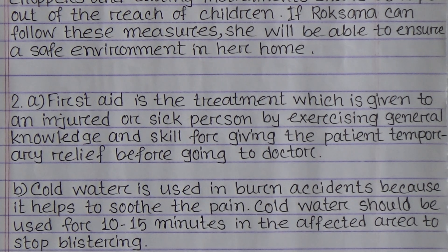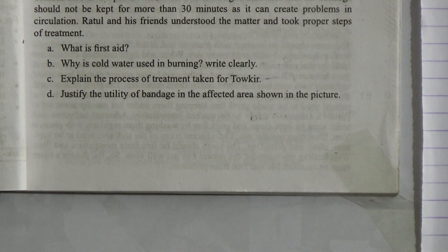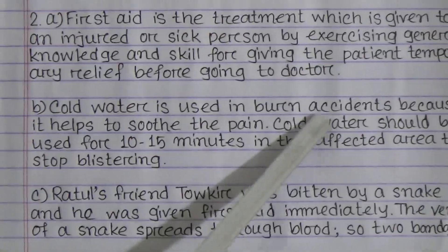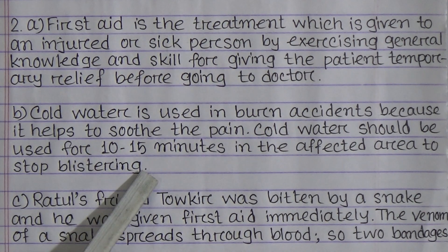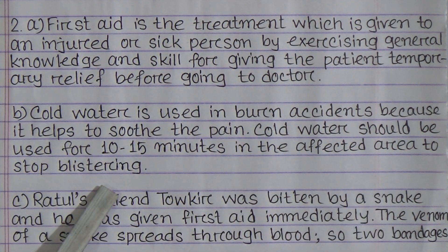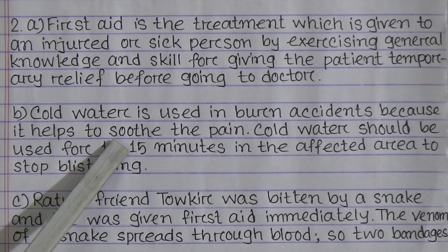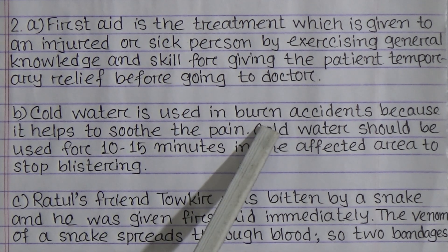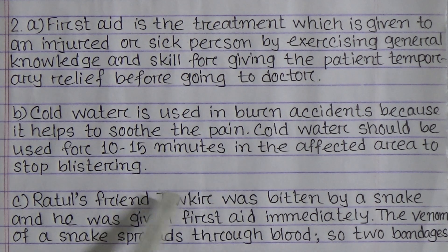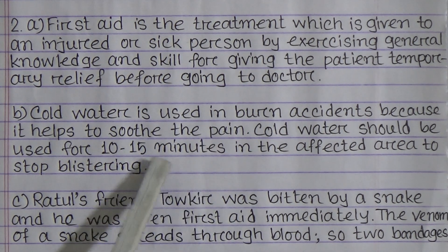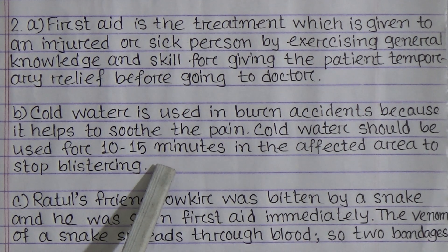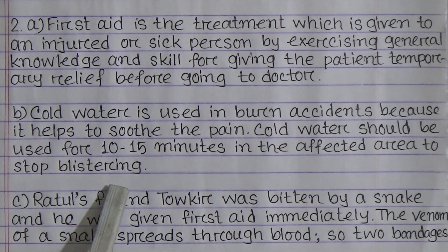Question B: Why is cold water used in burning? Cold water is used in burn accidents because it helps to soothe the pain. Cold water should be applied for 10 to 15 minutes on the affected area to stop blistering. We use cold water to soothe the pain of the burn patient so that blistering on the body can be stopped.